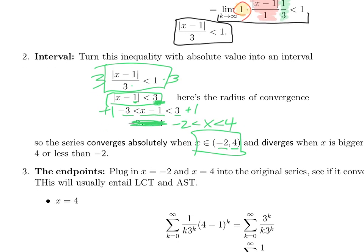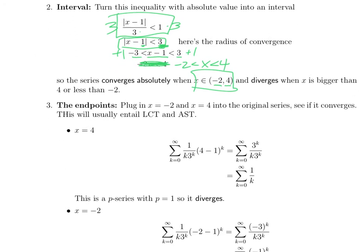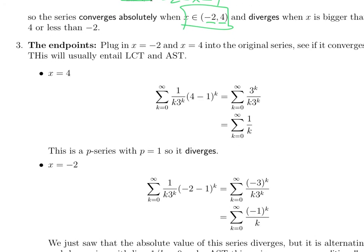But right at the endpoints, when x equals 4 or x equals negative 2, the ratio test gives you 1 and you don't know. So, those you have to use a different test. So, the next step, once you've found the interval apart from the endpoints, you have to check each endpoint.